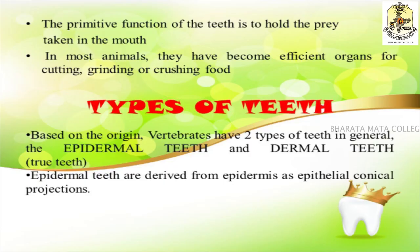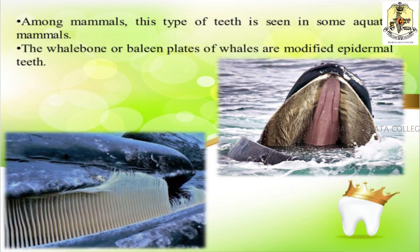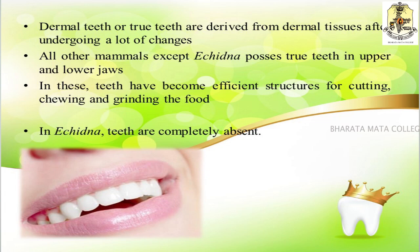Based on their origin, vertebrate teeth are classified into two types: epidermal teeth and dermal teeth. Epidermal teeth are derived from the epidermis as epithelial conical projections and are found in lower vertebrates like fishes, amphibians, and reptiles. In mammals, this type of teeth is seen in aquatic mammals — for example, the baleen plates and whale bone of whales are modified epidermal teeth. Dermal teeth, or true teeth, are derived from dermal tissues. All mammals except the echidna possess true teeth in their upper and lower jaws, and these teeth are mainly used for cutting, chewing, and grinding.